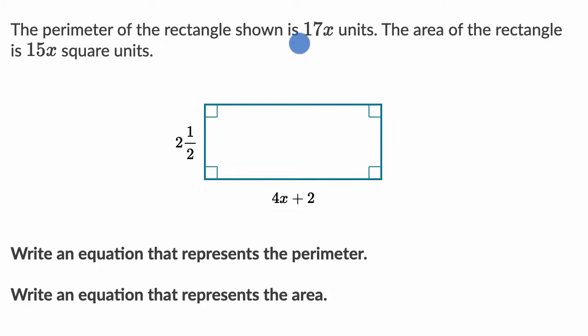We're told the perimeter of the rectangle shown is 17x units. The area of the rectangle is 15x square units. Write an equation that represents the perimeter and also write an equation that represents the area. So pause this video and see if you can write those two equations.